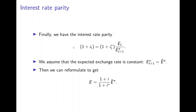Finally, we have the interest rate parity, which states that the nominal interest rate at home equals the nominal interest rate abroad multiplied by the expected change in the exchange rate over the coming year. Assuming the expected exchange rate is constant at E-bar, today's exchange rate equals the expected exchange rate multiplied by the ratio of (1 + domestic interest rate) to (1 + foreign interest rate). A higher domestic interest rate implies an appreciation; a higher foreign interest rate implies a depreciation of the home currency.